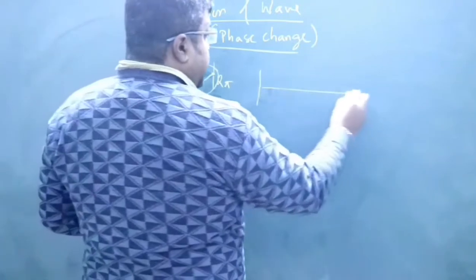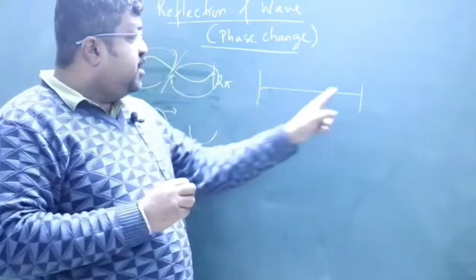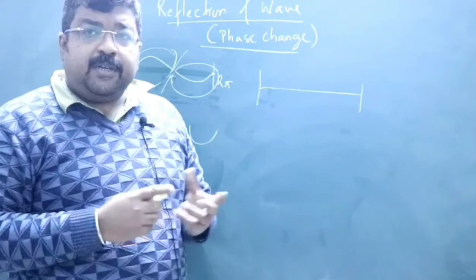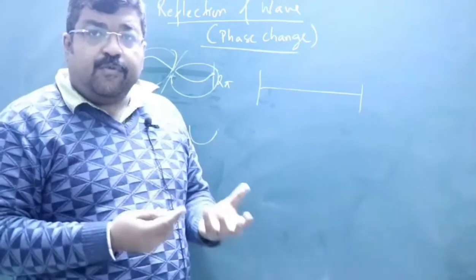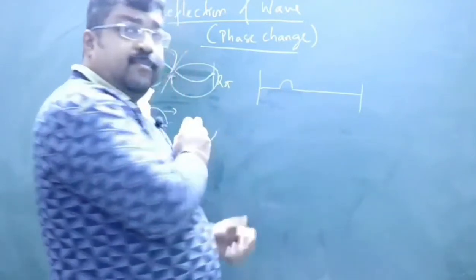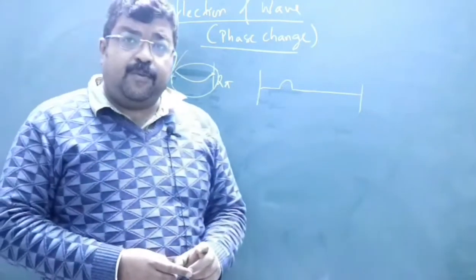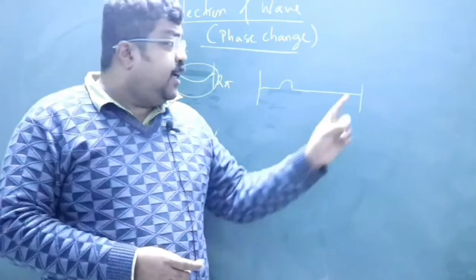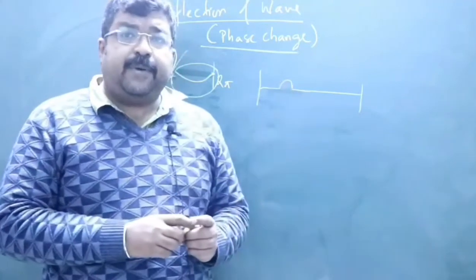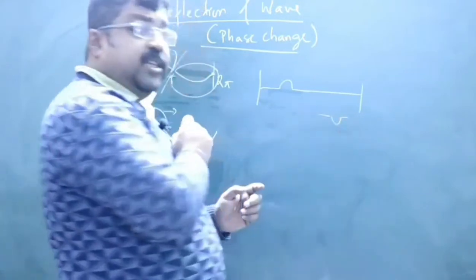Suppose you have a string fixed at both ends. This end is fixed and this end is also fixed. For a fixed end, the displacement has to be zero — it cannot move because it is fixed. So if a wave pulse is traveling in this direction, at this point the resultant displacement has to be zero. That means on reflection, the phase has to change by pi.